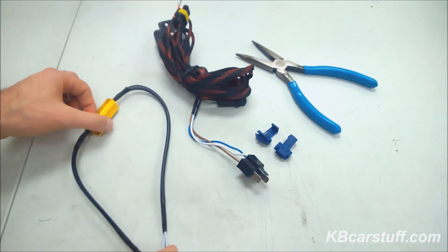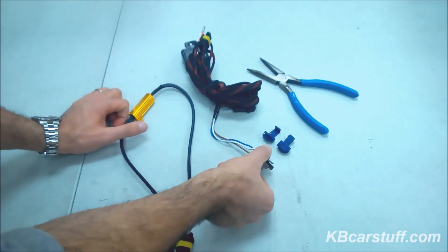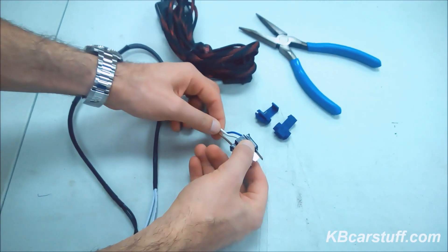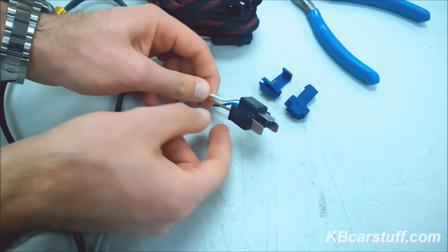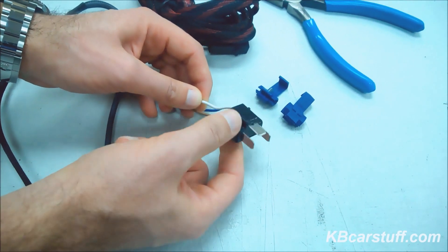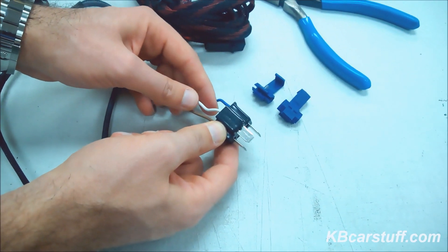Now where you need to install the load resistor is you need to install the load resistor across the low beam circuit. In this case, the ground wire would be your negative wire, your white wire would be your positive wire.